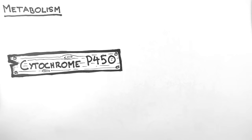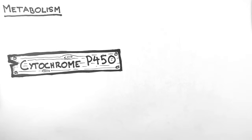These cytochrome P450 enzymes are abundant in the liver and different types metabolize different drugs. For example, CYP1A2 metabolizes caffeine, whereas CYP2E1 metabolizes alcohol.